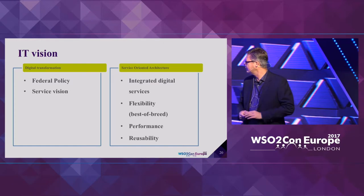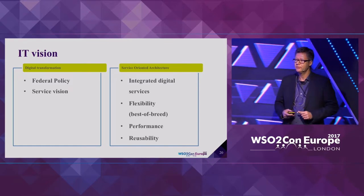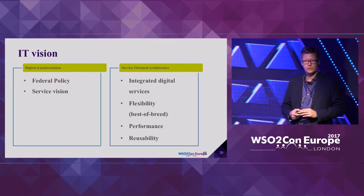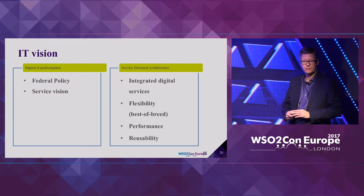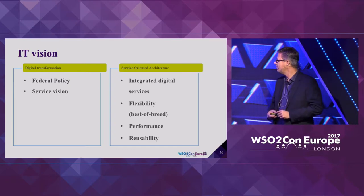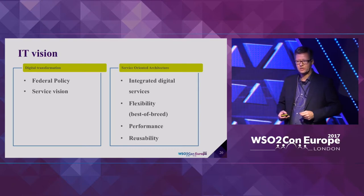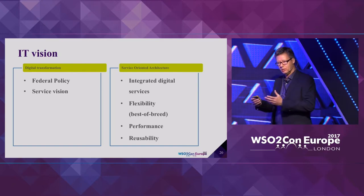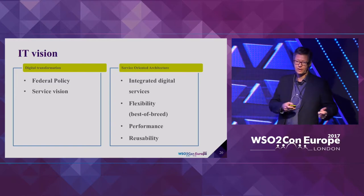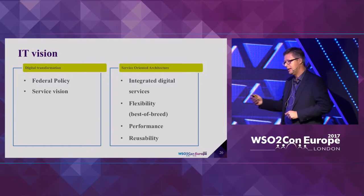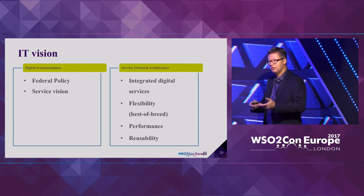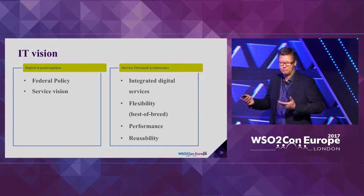In 2013, the federal government issued a policy that all services provided by the Dutch government should be delivered electronically by all government agencies. Since then, we have been working hard to deliver our services through our digital front office. At the same time, our organization is trying to formulate a regional vision on how to provide services to our customers — so we are doing IT integration and automation while also formulating our vision in parallel.